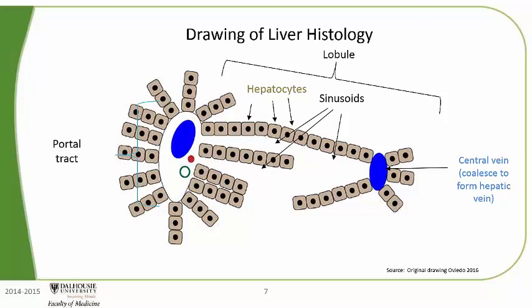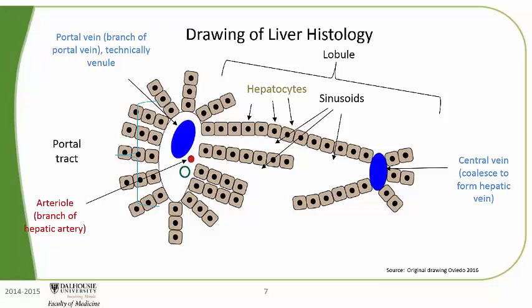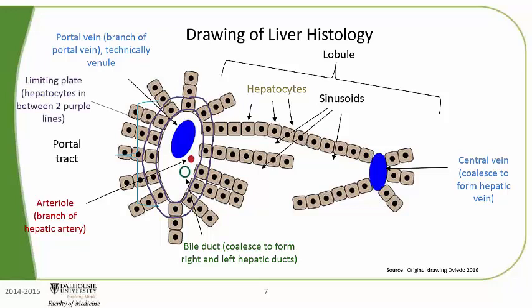The portal tract is a connective tissue region that contains the portal vein, arteriole, and bile duct. The portal vein is technically a venule, but most people refer to it as the portal vein. This portal vein is a tiny branch of the large portal vein that we saw entering the liver. The arteriole is a tiny branch of the hepatic artery. This bile duct is an intrahepatic bile duct, the same thing as a small bile duct. The small bile ducts coalesce to form the right and left hepatic ducts. The hepatocytes which surround the portal tract get a special name: the limiting plate.